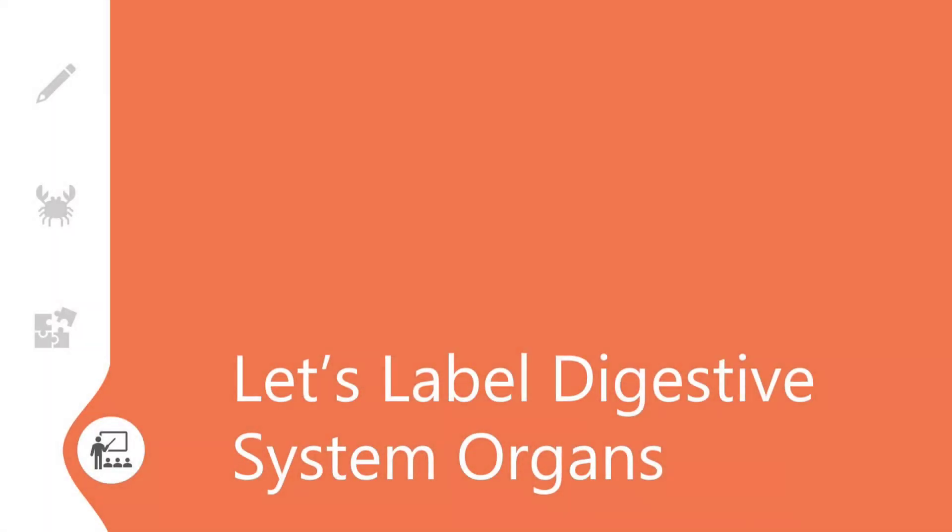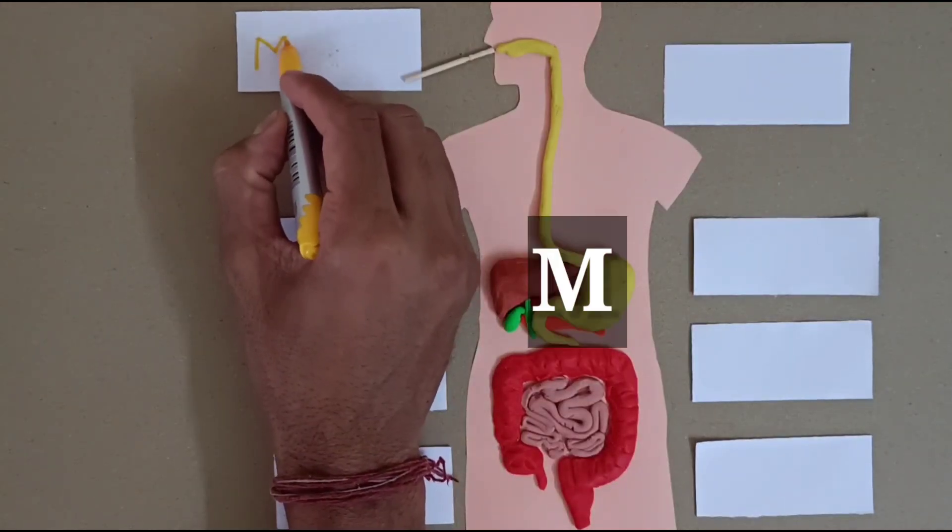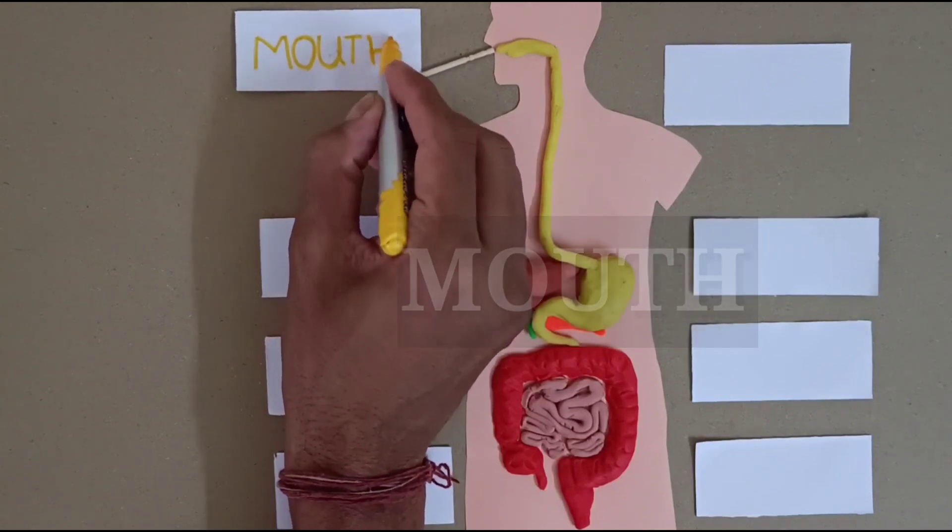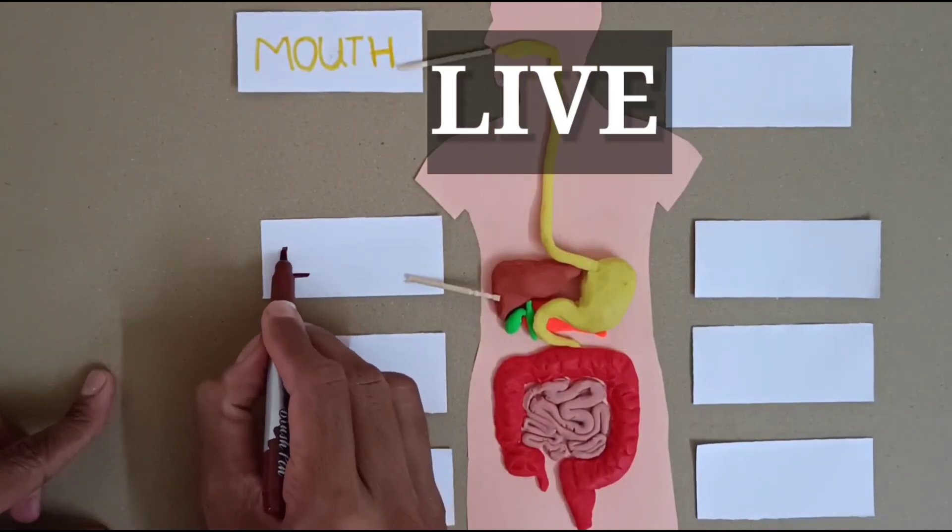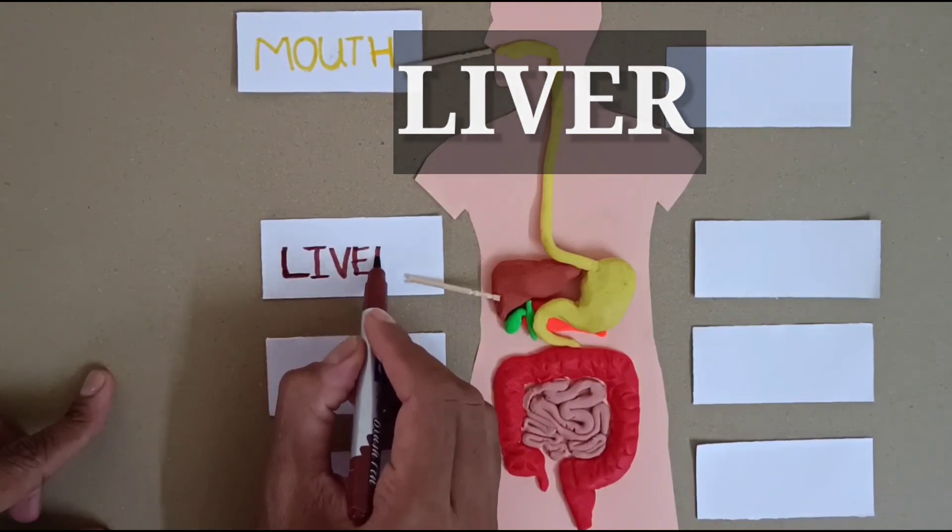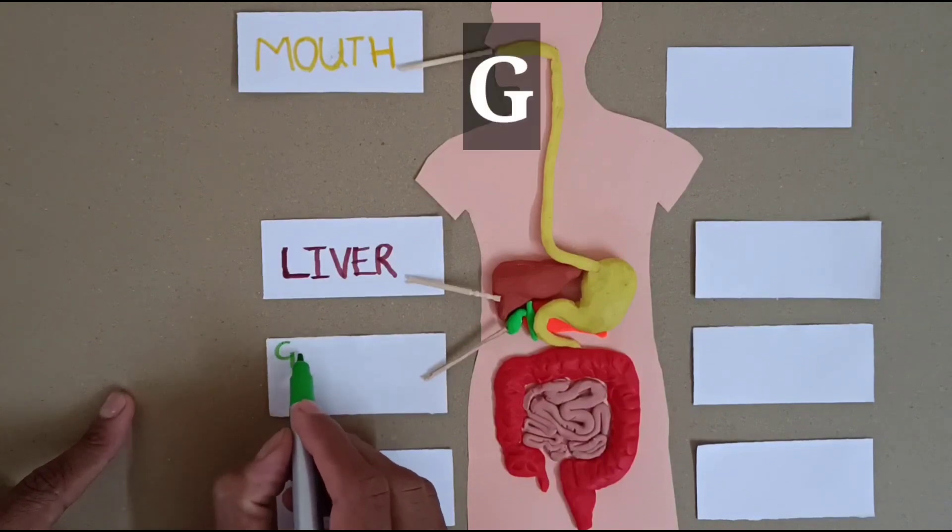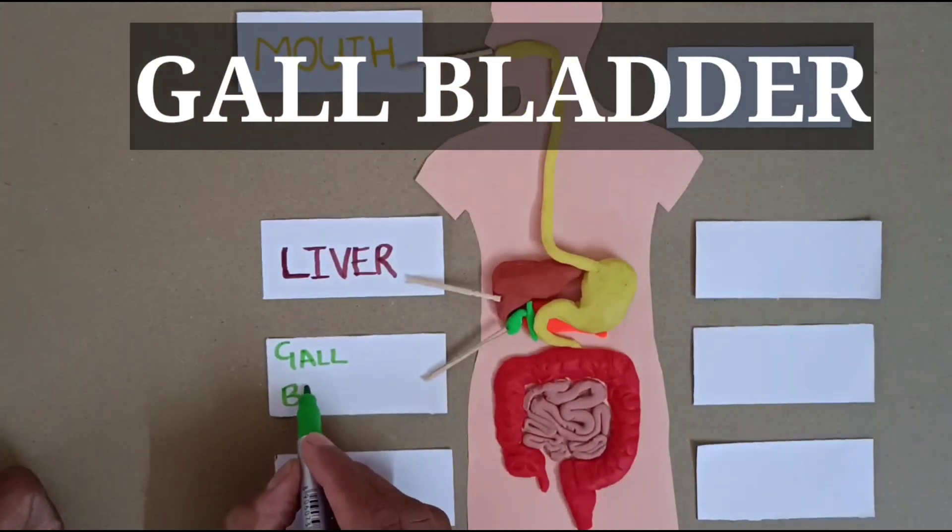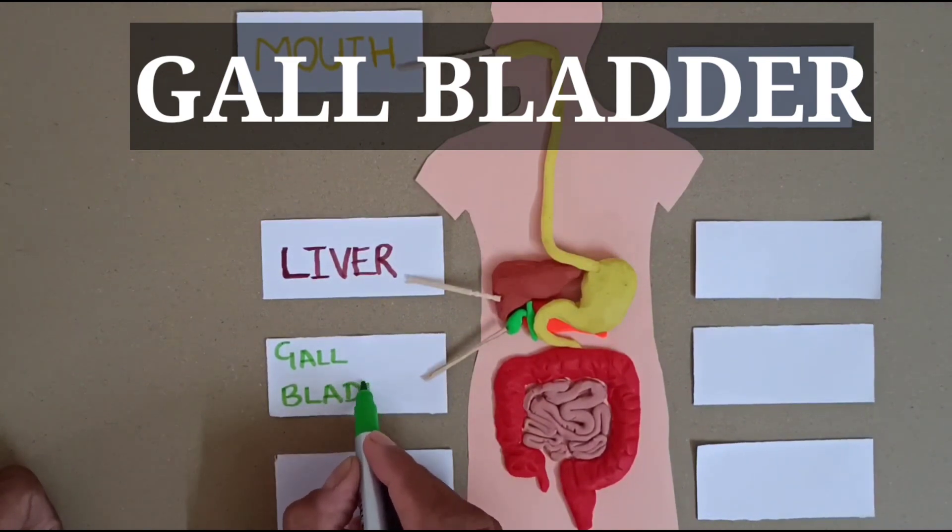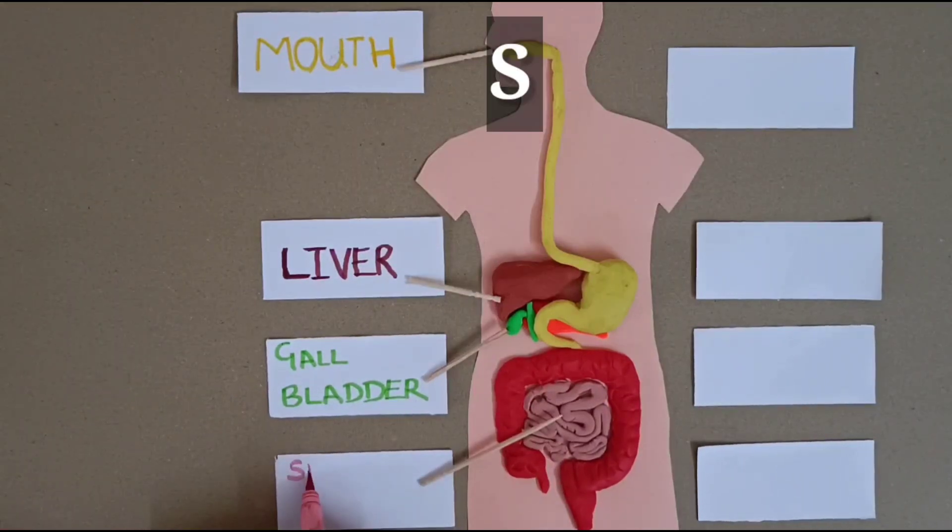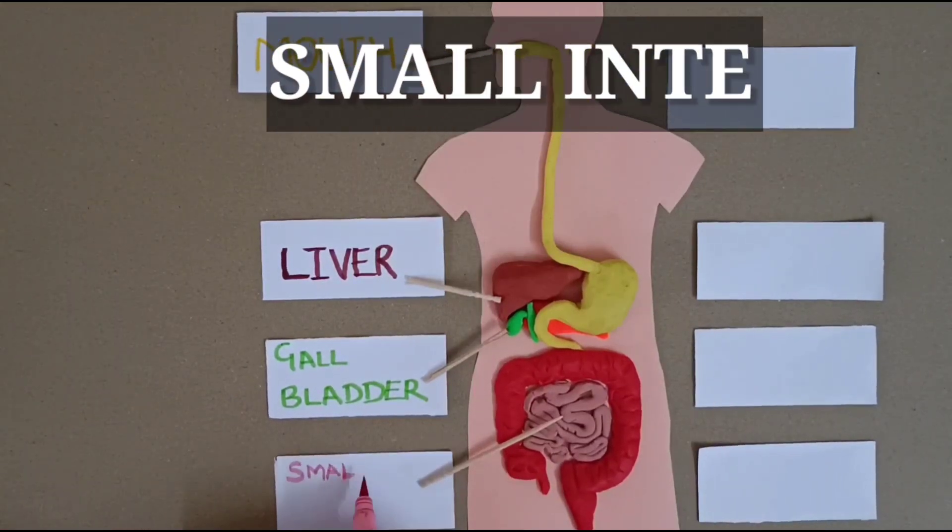Let's label digestive system organs. First organ is mouth. Second one is liver. Third organ is gallbladder. Next organ is small intestine.